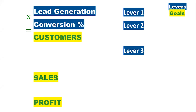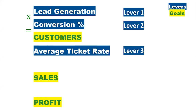Lever 3 is Average Ticket Rate. If you have 25 customers, some buy goods worth one lakh rupees, some 50,000, some 10,000. Calculate your average ticket rate: take your monthly or quarterly turnover and divide by number of customers or invoices. With the same number of customers, if you increase your ticket size, your business improves. Lever 4 is Number of Transactions — how many repeat purchases do your customers make.